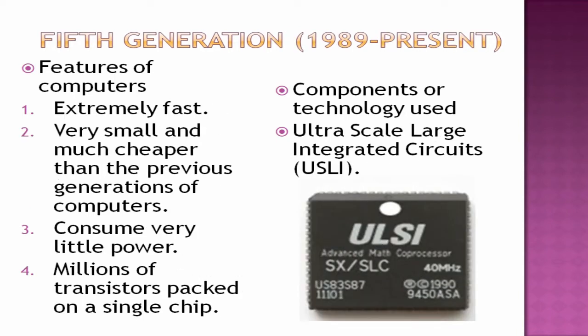The fifth generation of computers, from 1989 till the present, is extremely fast, very small, and much cheaper than previous generations. It consumes very little power, with millions of transistors on a single chip. The component used is Ultra Large Scale Integrated circuits, ULSI — also a microprocessor inside your CPU. The next generation beyond the fifth will be artificial intelligence, which is considered the sixth generation of computers.